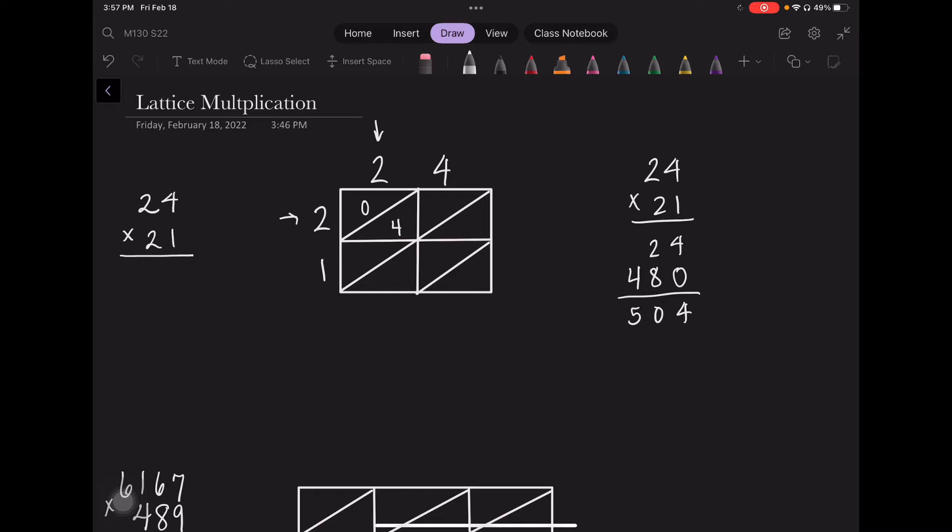2 times 4 is 8, that's 0, 8. 2 times 1 is 2, that's 0, 2, and 4 times 1 is 4, that's 0, 4. And it doesn't matter the order in which you multiply those four numbers.